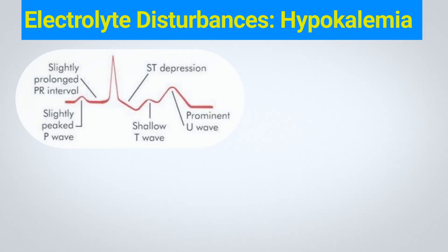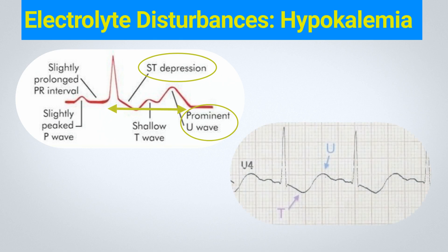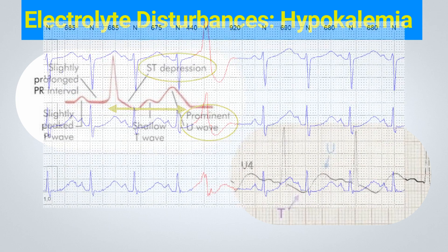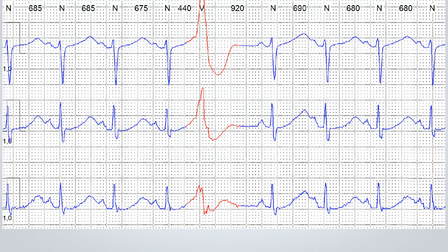Hypokalemia results in distinctive STT complex changes, typically causing ST depressions with prominent U waves and prolonged repolarization. With hypokalemia, U waves often become enlarged and may exceed T wave height. Accurate QT interval measurement can be challenging due to merging T and U waves. Take a look at this ECG — it is a 24-hour monitoring tracing from a 4- to 6-year-old female patient with tubular renal disease, leading to severe and refractory hypokalemia.